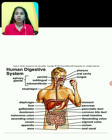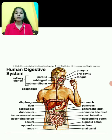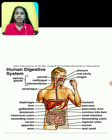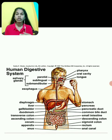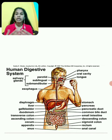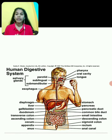Before I start the topic, I would like to discuss about digestion — what digestion is — because it is the most important word for this whole system. Digestion is basically a process through which larger molecules of food break down into smaller molecules, which are soluble in water and later on give energy to the tissues and cells.